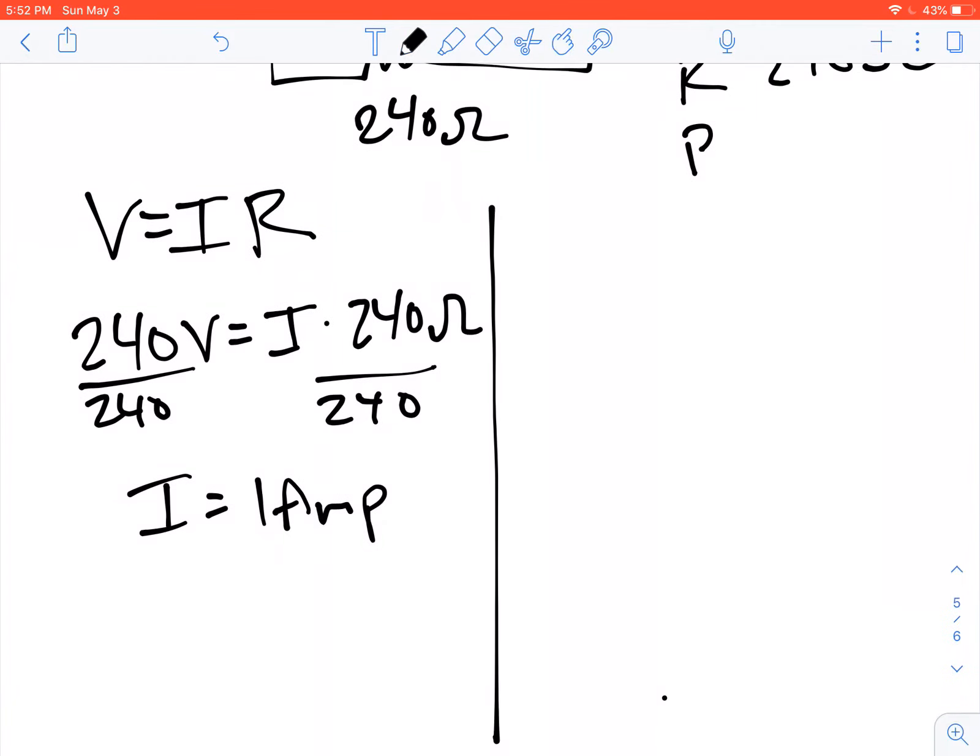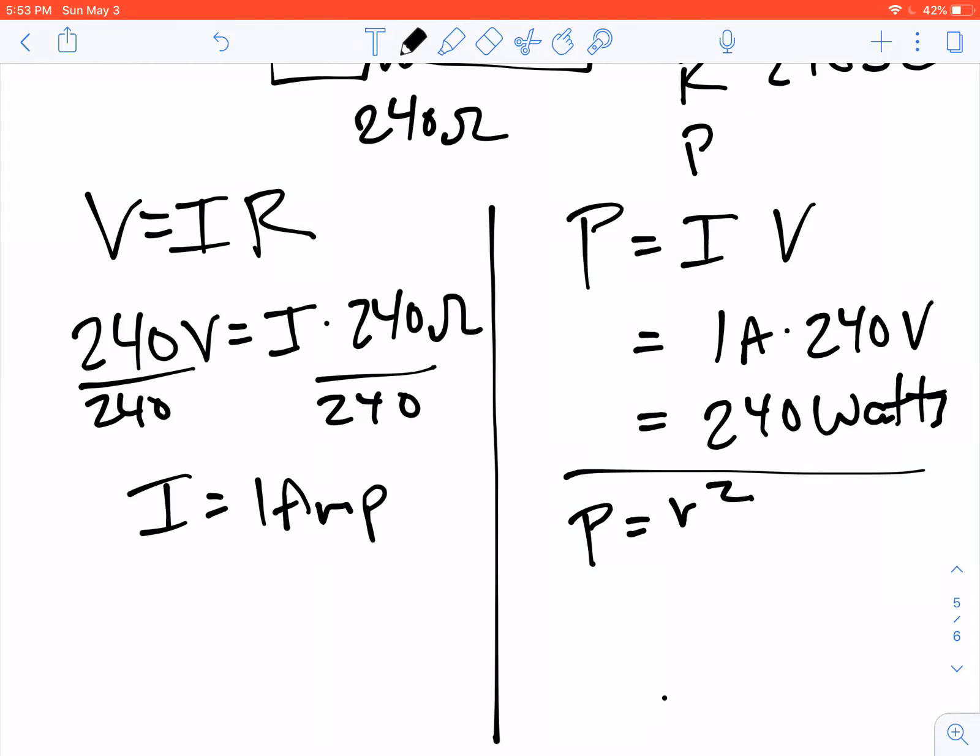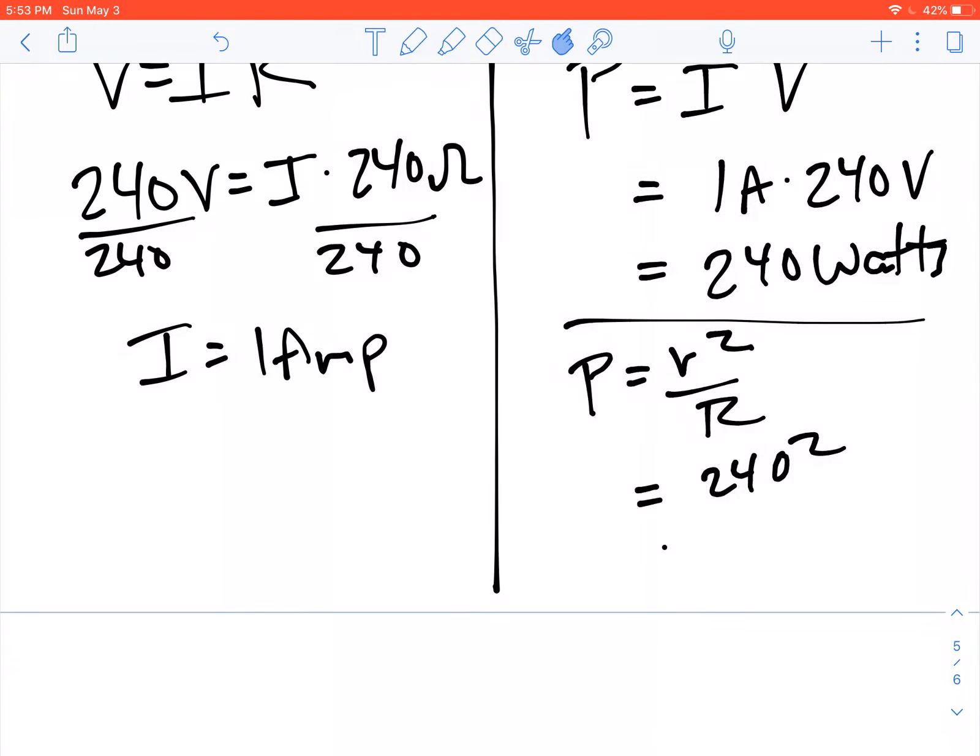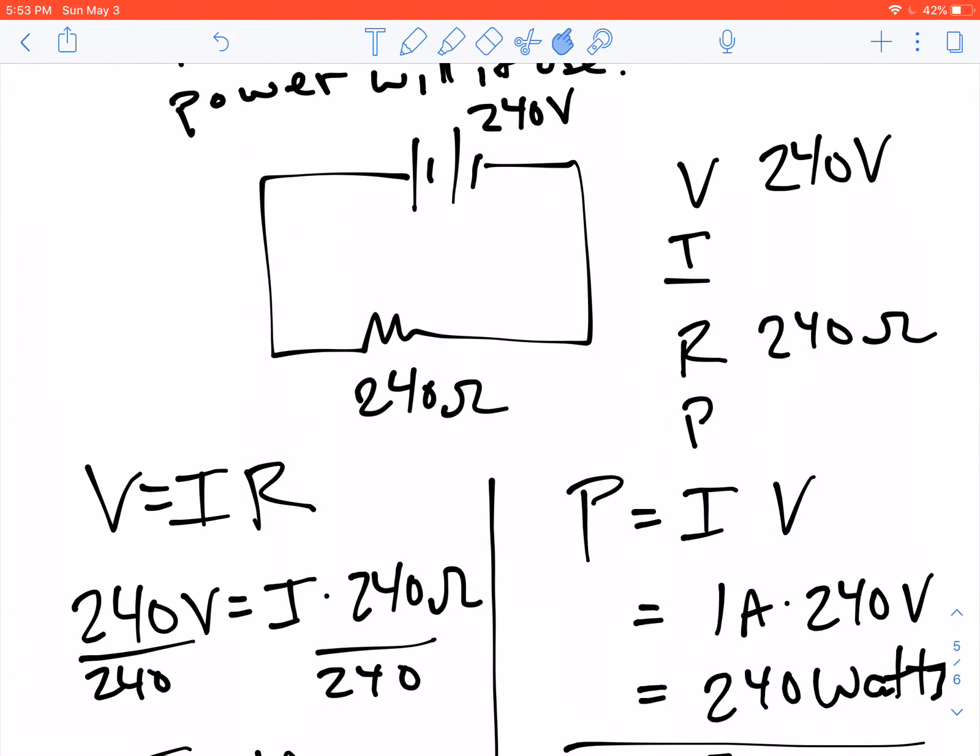All right, so now we're going to try to calculate the power. We do P equals IV. We have 1 amp, and we have 240 volts. We get 240 watts of power coming out. We can double check that with, for example, P equals V squared over R. We'll do 240 squared divided by 240. Is it equal to 240 watts? So in both of those calculations, we got 240. So we had 1 amp, and we had 240 watts.